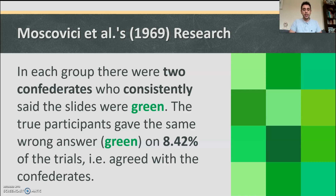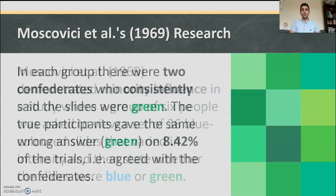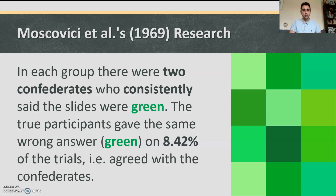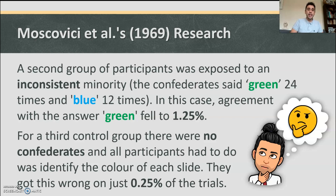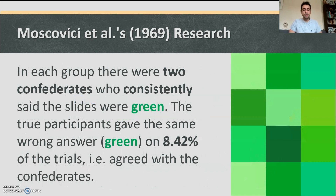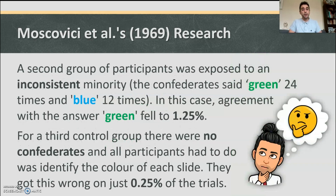The true participants gave the same wrong answer — green — on 8.42% of the trials, agreeing with the confederates, even though all the slides were actually blue. Because the confederates kept consistently saying they were green, 8% of the time participants agreed. A second group was exposed to an inconsistent minority — confederates said green 24 times and blue 12 times — and agreement fell to only 1.25%. In a third control group with no confederates, participants got the color wrong just 0.25% of the time — meaning 99.75% of the time they correctly said blue.